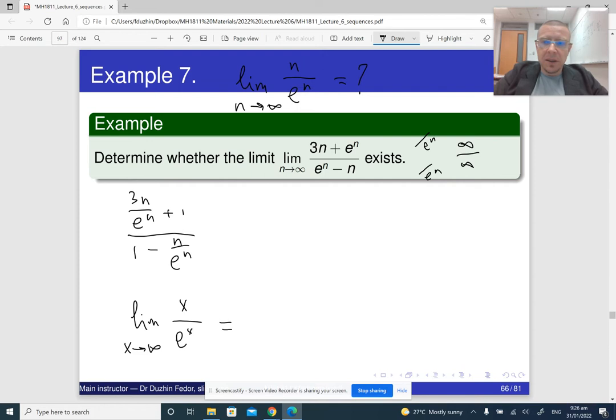So this is the indeterminate form of the type infinity over infinity because both numerator and denominator approach infinity. So when we do this, we have our L'Hôpital's rule, and basically we can take the limit as x approaches infinity of the ratio of two derivatives. So, and the derivative of x is 1 and the derivative of e to the x is still e to the x.